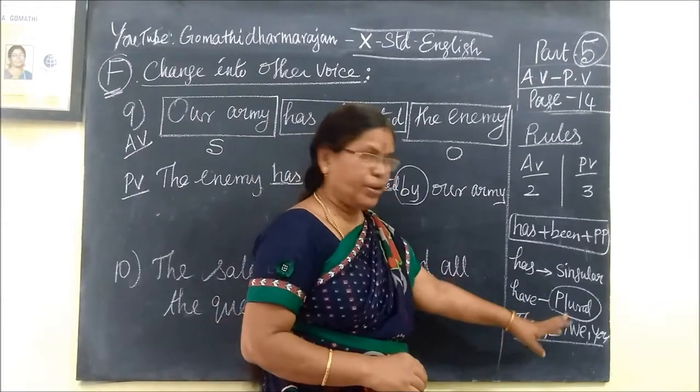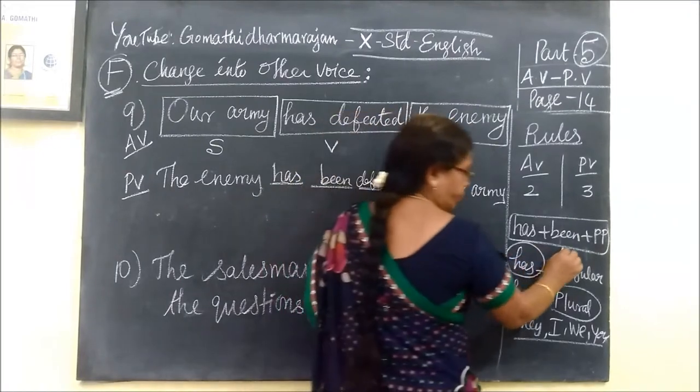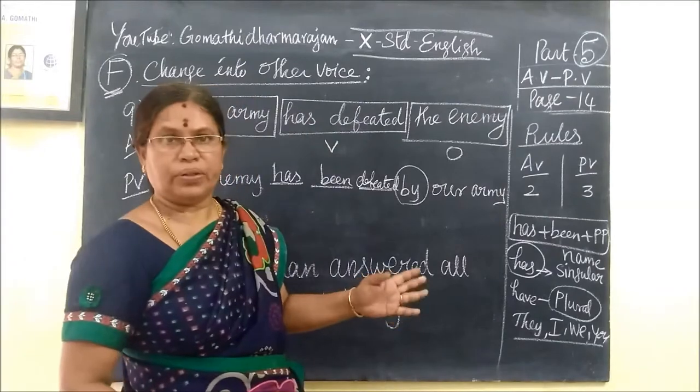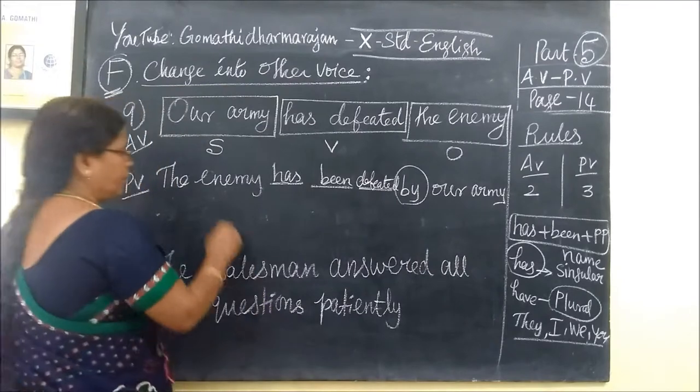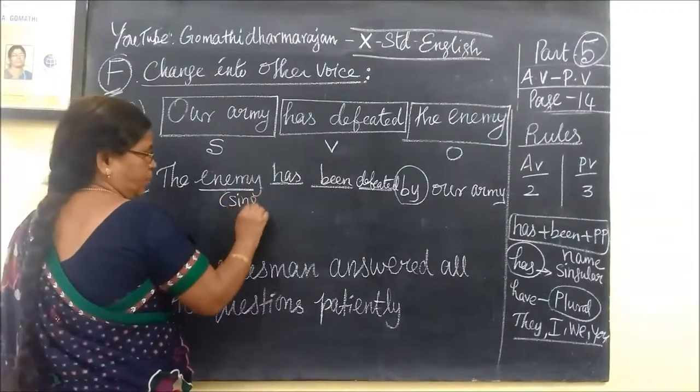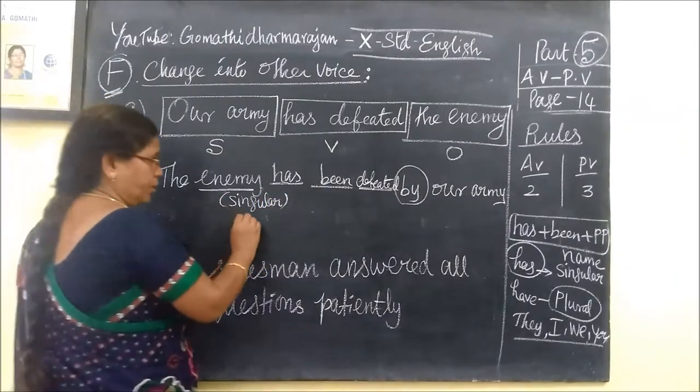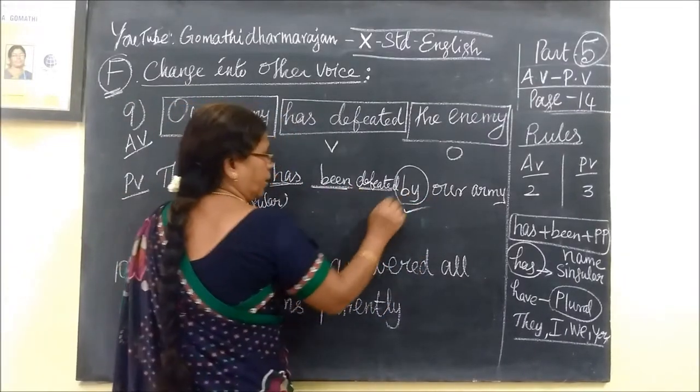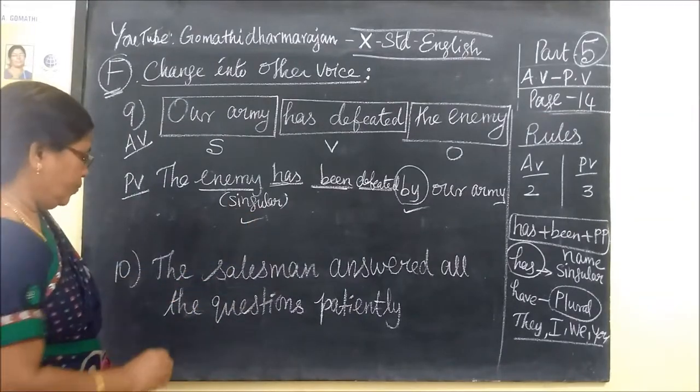And then plural form is a structure. Has is singular. Singular group is name. Name is has. Then a single form, one and one equipment for a house. The enemy is a single form.